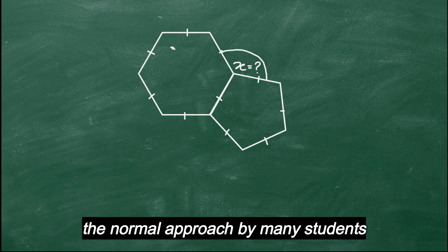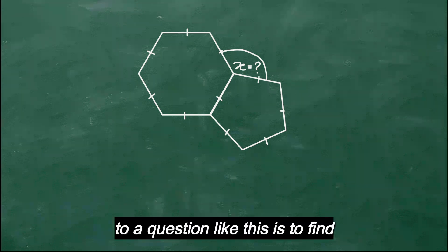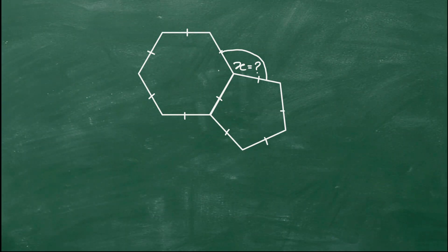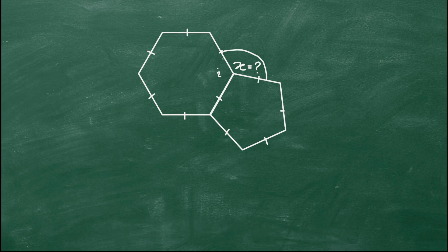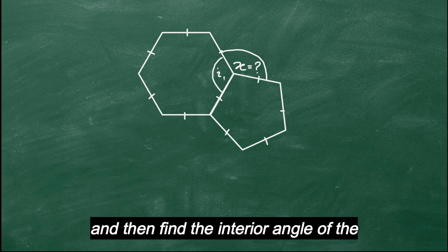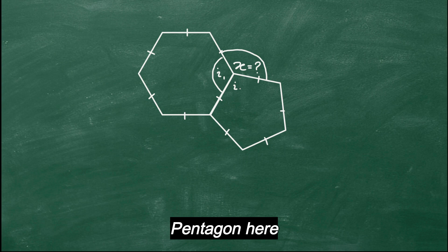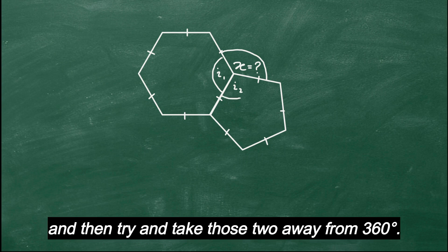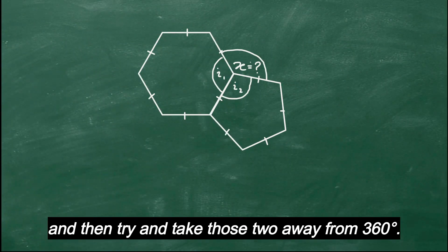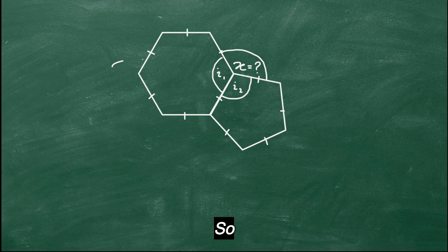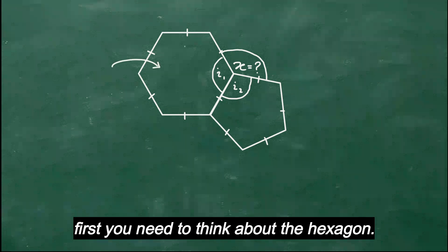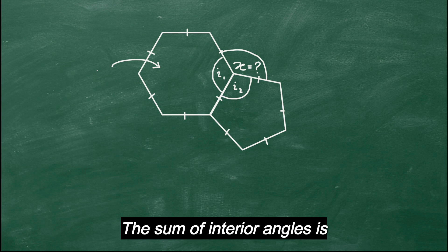Now the normal approach by many students to a question like this is to find this interior angle of the hexagon here, and then find the interior angle of the pentagon here, and then try and take those two away from 360 degrees. It looks something like this. So first you need to think about the hexagon, the sum of interior angles.